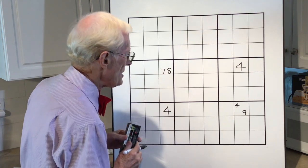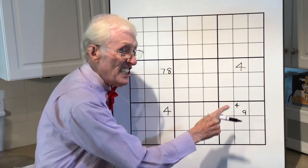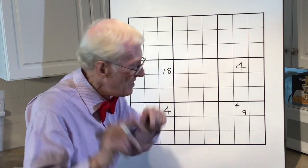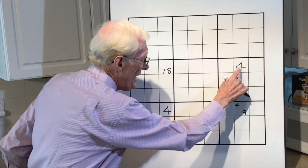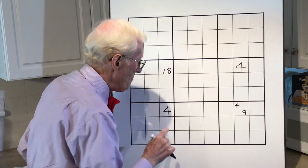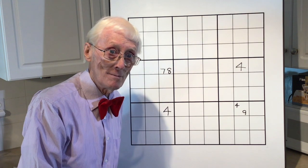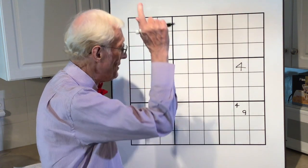Now, have a look at this 4 over here. It can see, remember this word see, it can see that 4 and it also can see that 4. And because of that, it cannot be a 4. We get rid of it. We eliminate it. We remove it.